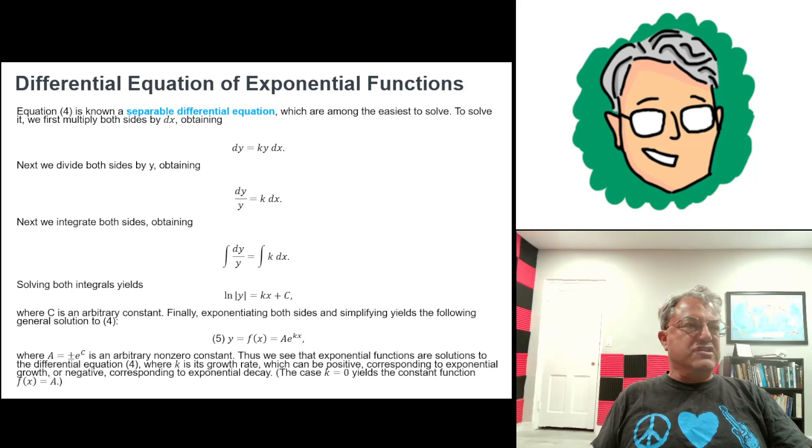Well, now we're almost done. Now all we have to do is integrate both sides. So we write the integral of dy/y on the left equals the integral of k dx on the right. These are both very easy integrals. We know that the integral of dy/y is just the natural logarithm of y, or technically the natural logarithm of the absolute value of y, plus some integration constant. And then the right side is just k times x plus some integration constant.